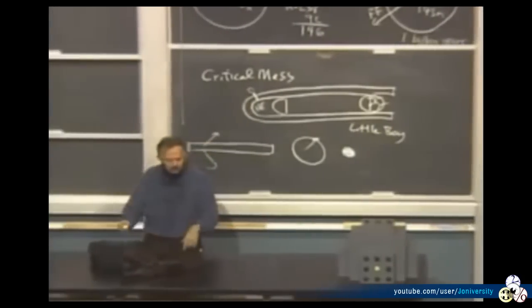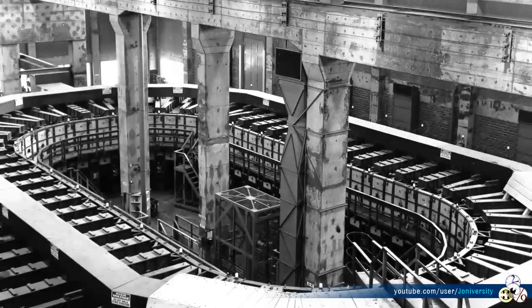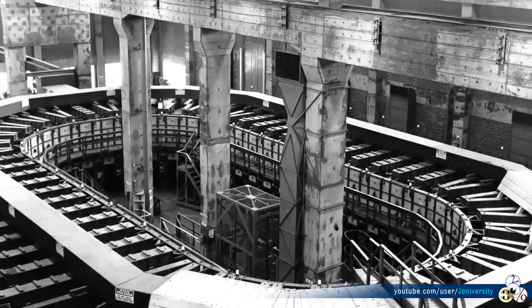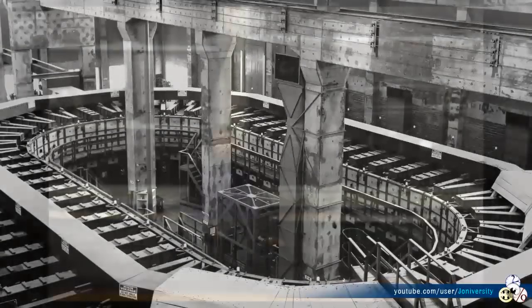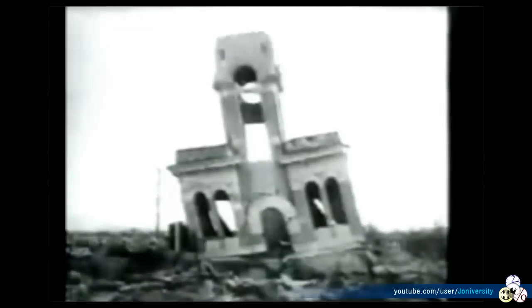And so General Groves had dozens of these things built in Oak Ridge, Tennessee, where by summer of 1945, they had separated out enough uranium for one bomb, which they put into the Hiroshima bomb. They never tested it and dropped it over Hiroshima, killing 50,000 to 150,000 people.